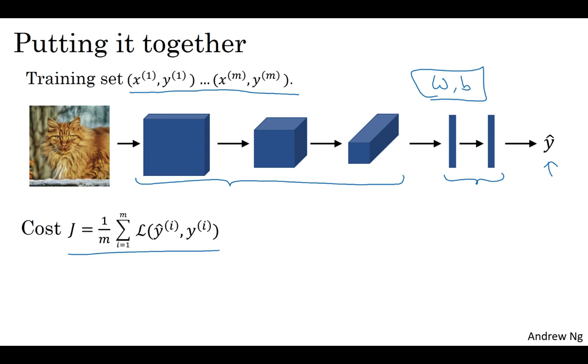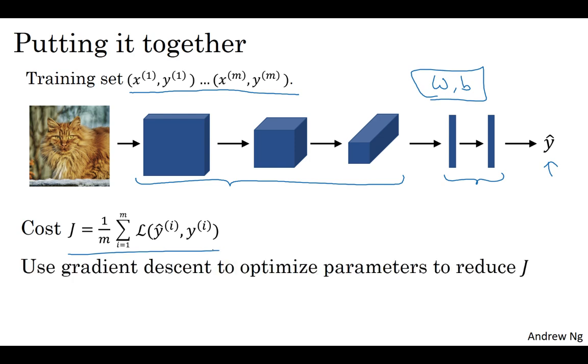So to train this neural network, all you need to do is then use gradient descent or some algorithm like gradient descent with momentum or rmsprop or Adam or something else